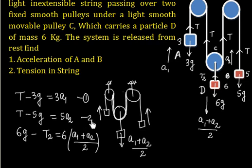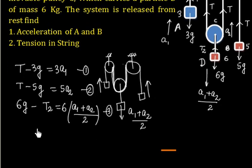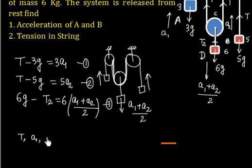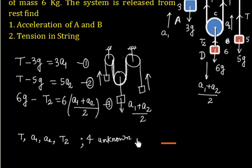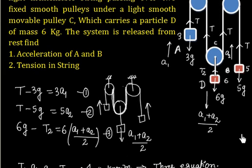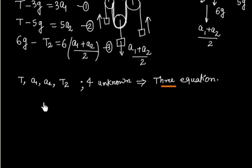We have 4 unknowns: T, A1, A2, and T2 — but only 3 equations. We need one more. Since pulley C is massless (light), the net force on it must be zero. The two segments of string pull up with tension T each, and T2 pulls down, so T2 = 2T. This gives us our fourth equation.